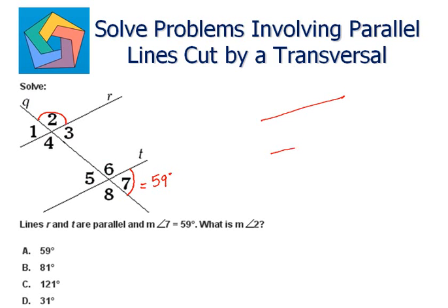Let's see it in another figure. This is r, this is t, this is transversal. This is angle 7 equals 59 degrees, and this is angle 2.